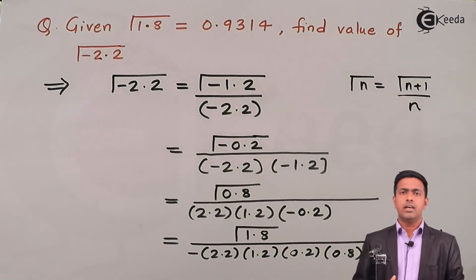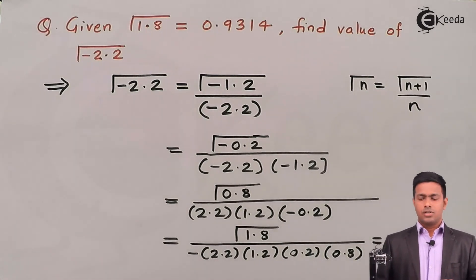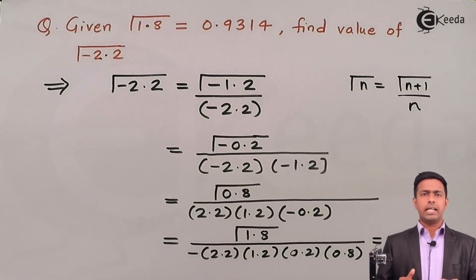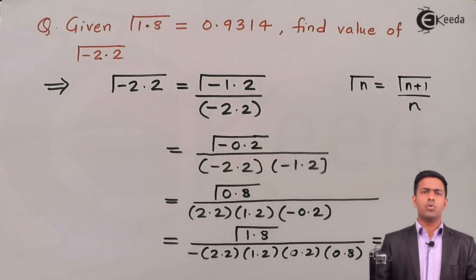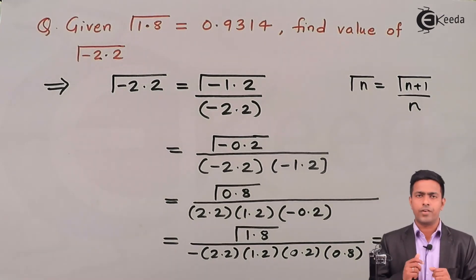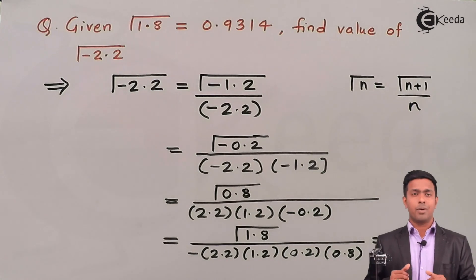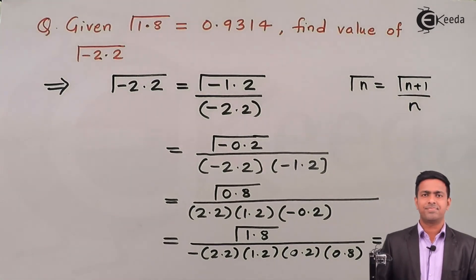So this is the value of gamma(-2.2) which we got by using the properties of gamma function. If you like this video, do not forget to log in to ekida.com to learn more videos about engineering mathematics. You can also follow us on Facebook or Twitter for more updates about this subject. Thank you very much.